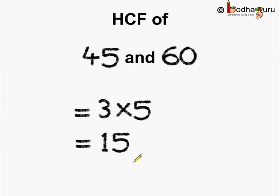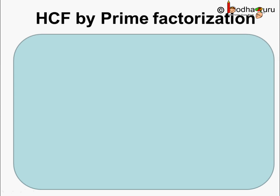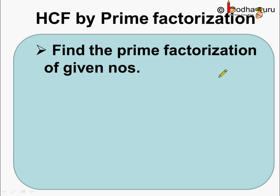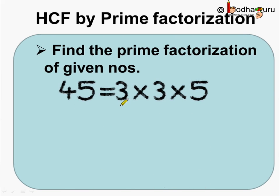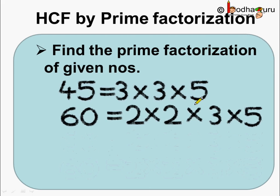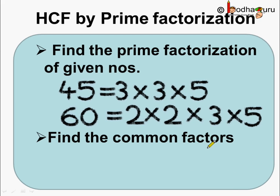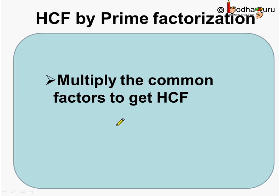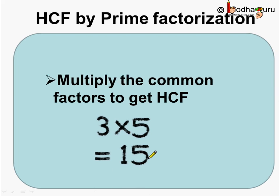Let's reiterate how to find the HCF by prime factorization method. First, do the prime factorization of the given numbers — for 45 it is 3 × 3 × 5, and for 60 it is 2 × 2 × 3 × 5, where all factors are prime numbers. Next, find the common factors — here 3 and 5. Finally, multiply the common factors to get the HCF: 3 × 5 = 15. This is how we find the HCF using the prime factorization method.